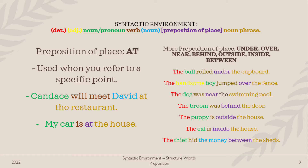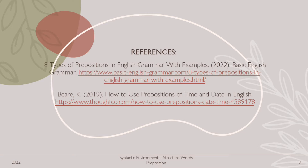The preposition 'in' is used when you refer to something inside or confined. For instance, 'The dog is in the garden.' Preposition 'at' is used when you refer to a specific point. For example, 'Candace will meet David at the restaurant.' There are several more prepositions of place, such as under, over, near, behind, outside, inside, and between.